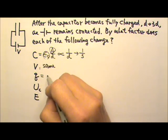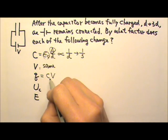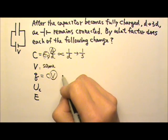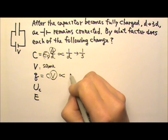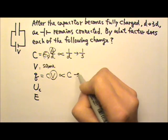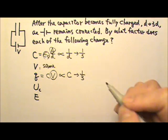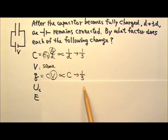Q equals CV. Because the voltage is going to stay the same, Q is proportional to the capacitance, and the capacitance becomes one-third. What does this mean? This means in order to maintain constant voltage, the battery has to pull some charges back. So now the capacitor holds less charge.